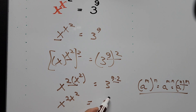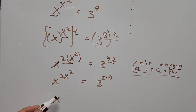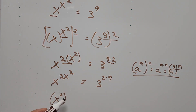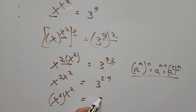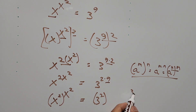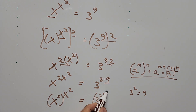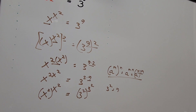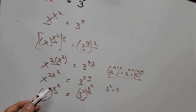The right hand side exponent 9 times 2 can be rewritten as 2 times 9, so the equation becomes x to the power of 2, raised to x squared, equals 3 to the power of 2, raised to 3 squared — since 9 can be written as 3 squared. Now focusing on the base and the exponent on the right hand side: we have base 3 squared and exponent 3 squared, meaning the base is the same as the exponent.